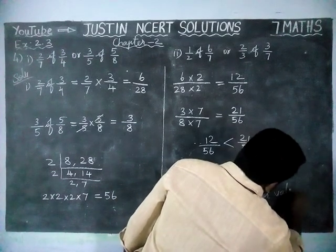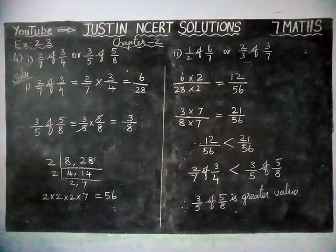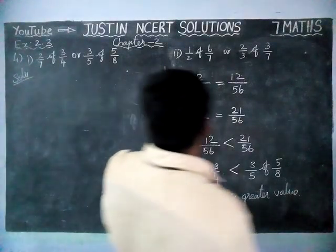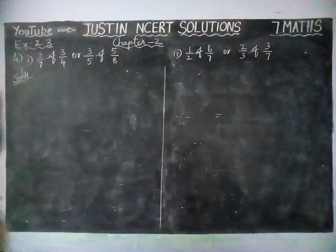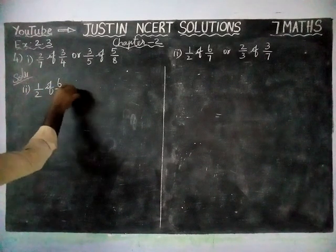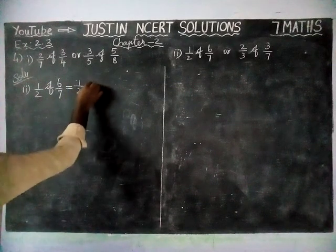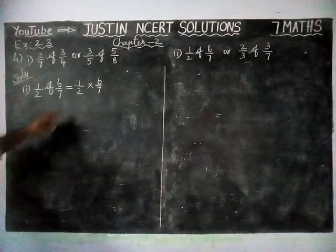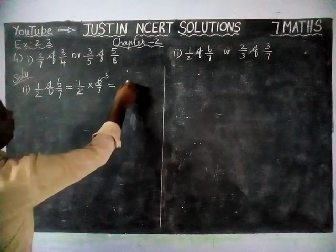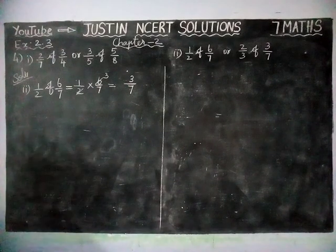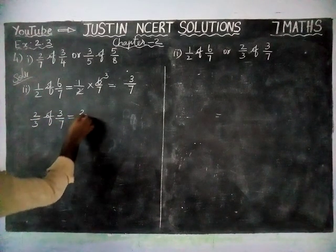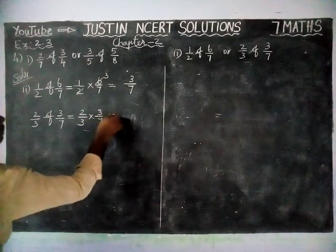Now we are going to see the second part. Second Roman numeral: 1/2 of 6/7 is equal to 1/2 into 6/7. We have to multiply. If it is possible to simplify by a common divisor, we can simplify here. 2 is the common divisor: 2 into 3 gives 6, so we simplify to get 3/7.